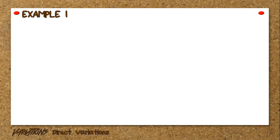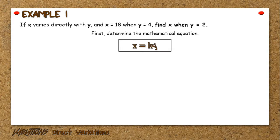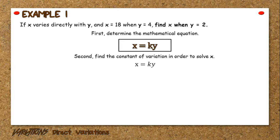Example 1: If x varies directly with y and x equals 18 when y equals 4, find x when y equals 2. First, determine the mathematical equation which is x equals k times y, wherein k is the constant of variation and must not be equal to 0. Second, find the constant of variation. Using the equation x equals k times y, substitute the given values: 18 equals k times 4. Divide both sides by 4 and the constant of variation is 9 over 2.